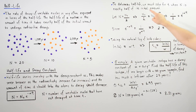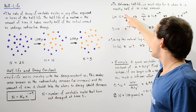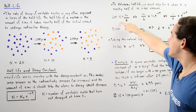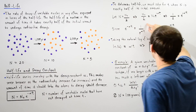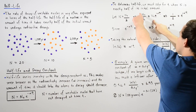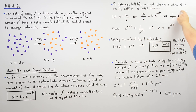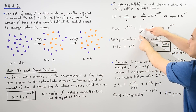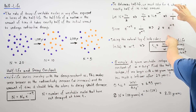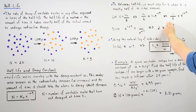To determine the half-life, we must solve for t when n is exactly half of its initial amount. If our initial amount is n-naught, then exactly half of that is n-naught divided by 2. So we set n-naught divided by 2 equal to n-naught times e to the negative alpha times t. The n-naught terms cancel out, and we have one-half equals e to the negative alpha times t.